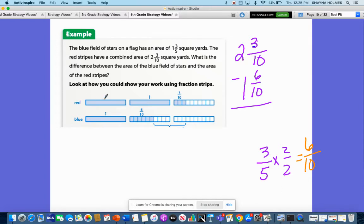So down here we have our red stripes, we have our first hole, this is our second hole, and then we have our 3 tenths here. Now down here at the blue field of stars we have our other hole and we have our 6 tenths represented.